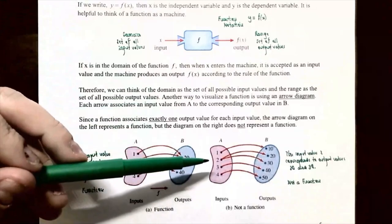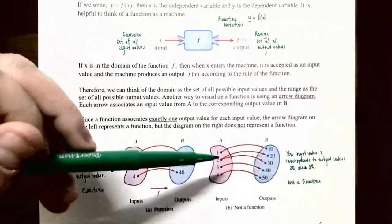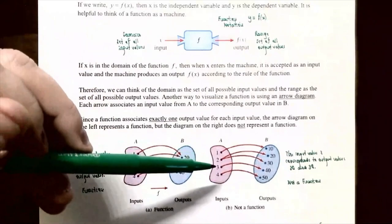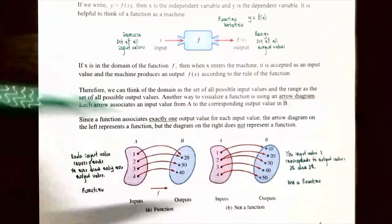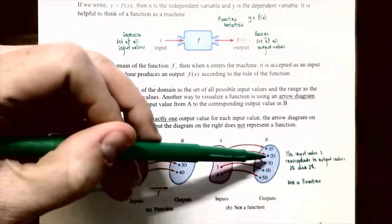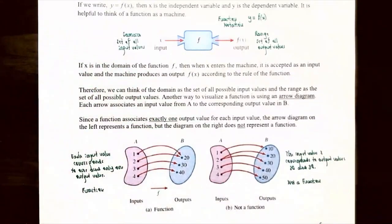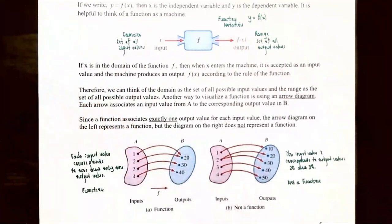In this other arrow diagram, you have the same numbers 1, 2, 3, 4 in the domain. However, 2 corresponds to both 20 and 30. This arrow diagram does not represent a function because input value 2 corresponds to two different values. The definition of a function requires that each input value corresponds to exactly one element in the range. Since 2 maps to two outputs, this is not a function.